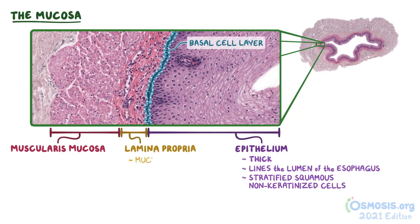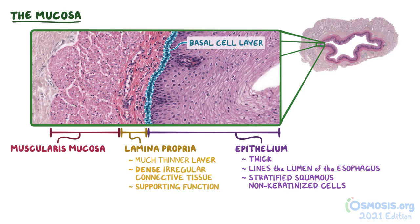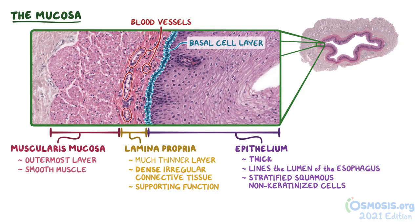The lamina propria is a much thinner layer of dense irregular connective tissue. It provides a supporting function to the epithelium, such as the blood vessels within the connective tissue that supply blood to the epithelium. The muscularis mucosa is the outermost layer of the mucosa and is comprised of smooth muscle. The muscle fibers in this image have a circular or dot-like appearance because the fibers run longitudinally, or in the same direction as the esophagus.